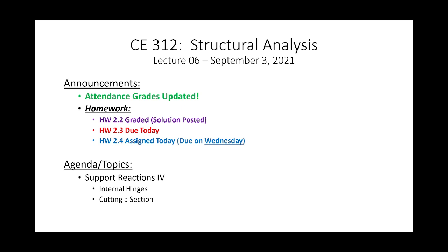Attendance grades are up to date. Homework 2.2 has been graded — the solution was posted. By and large everybody did well; if there were any mistakes it was little stuff, a couple of you got tripped up on the trig functions. Homework 2.3 is due today. I'm going to assign a homework today that's due Wednesday, not Monday — it's the holiday, so you don't have any homework due Monday.